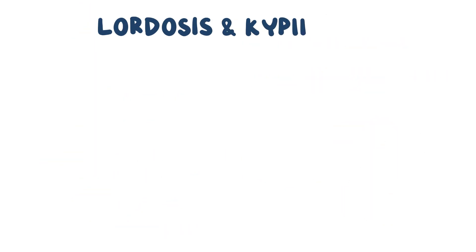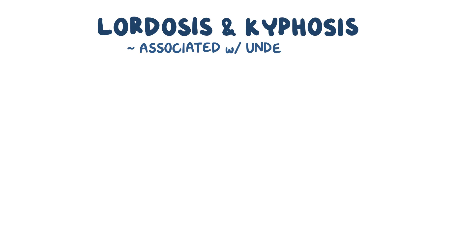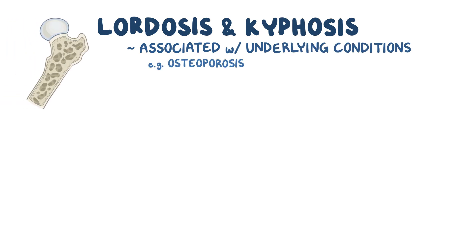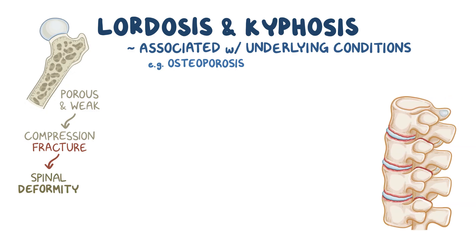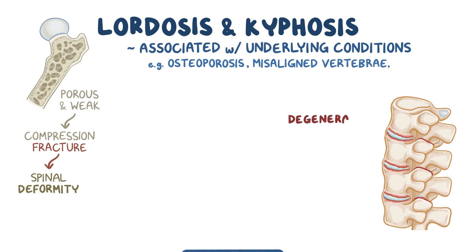Lordosis and kyphosis are typically associated with underlying conditions. For example, in osteoporosis, the bones become porous and weak, and can develop compression fractures causing the bones to collapse a little bit. This can cause a spinal deformity, and can also impinge on nearby nerves. Misaligned vertebrae can also exert too much pressure on the intervertebral discs, causing them to degenerate.